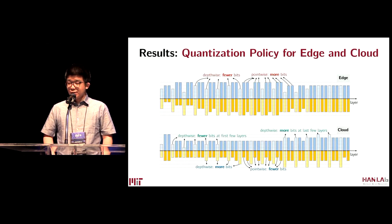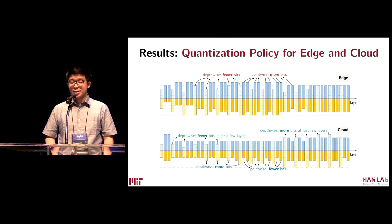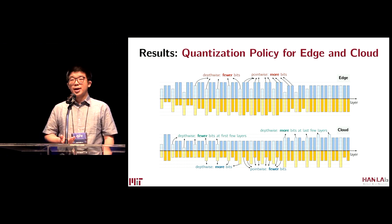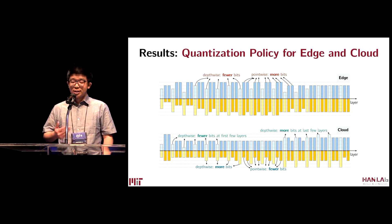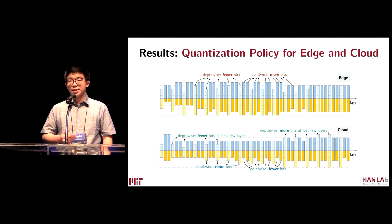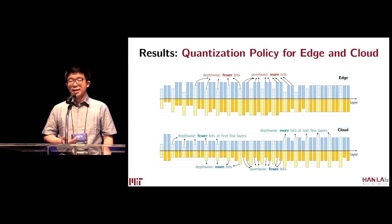We also visualized the quantization policy for both edge and cloud accelerators. Looking at the blue bars, which indicate the bit width for weights, we can see that the policies are drastically different. For edge accelerators, our HAQ assigns more bits to the point-wise layers and fewer bits to the depth-wise layers. For cloud accelerators, the pattern is similar for the first few layers; however, for the last few layers, our HAQ assigns more bits to the depth-wise layers, which is exactly the opposite to the pattern of the edge accelerator. This phenomenon again advocates the need for specialization for different hardwares.